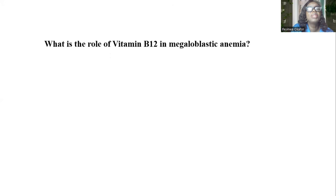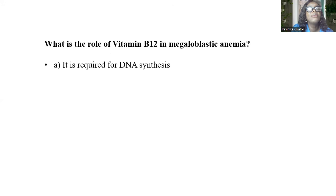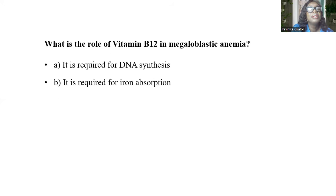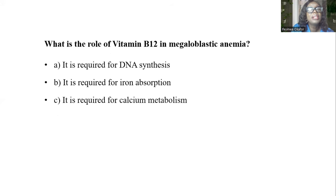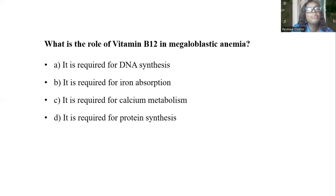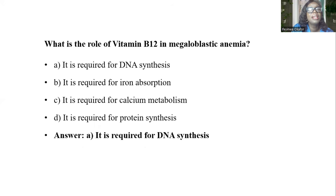What is the role of vitamin B12 in megaloblastic anemia? A, it is required for DNA synthesis. B, it is required for iron absorption. C, it is required for calcium metabolism. D, it is required for protein synthesis. The answer is A, it is required for DNA synthesis.